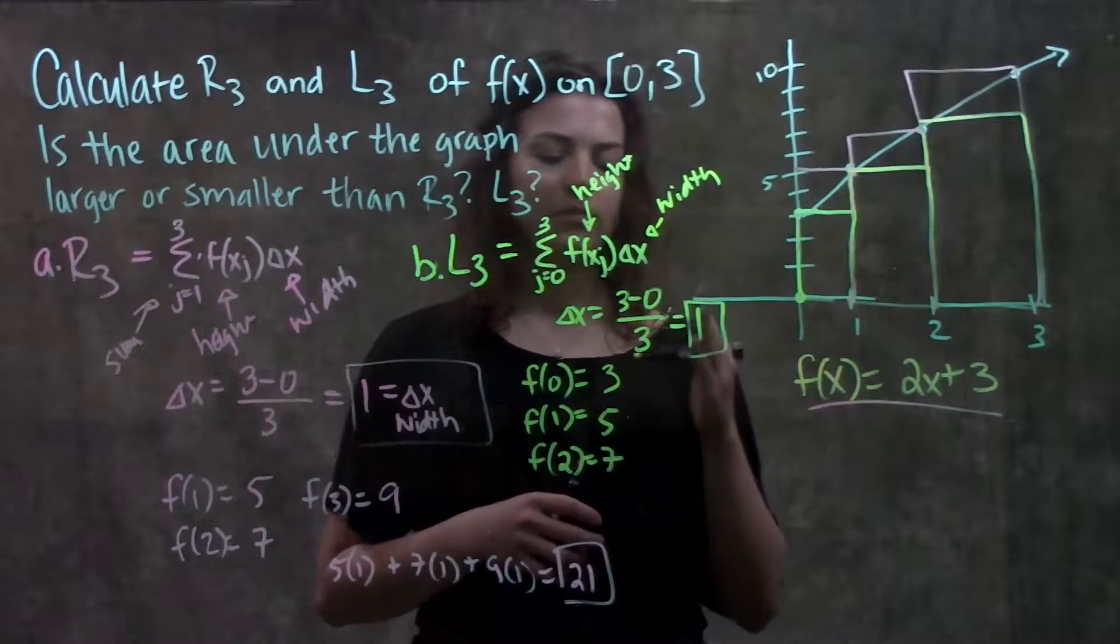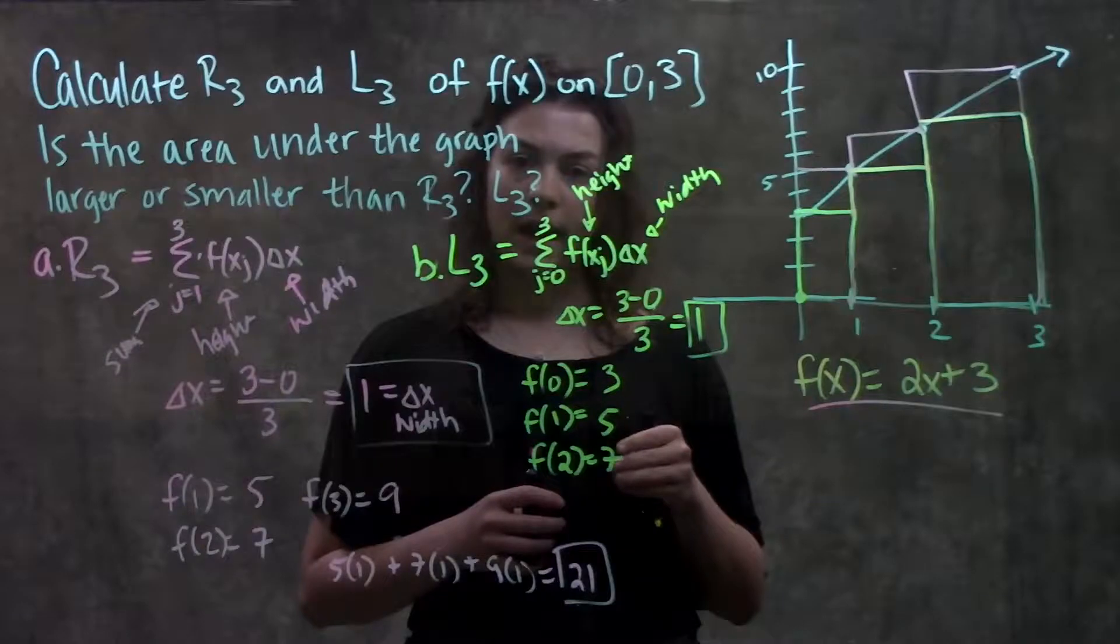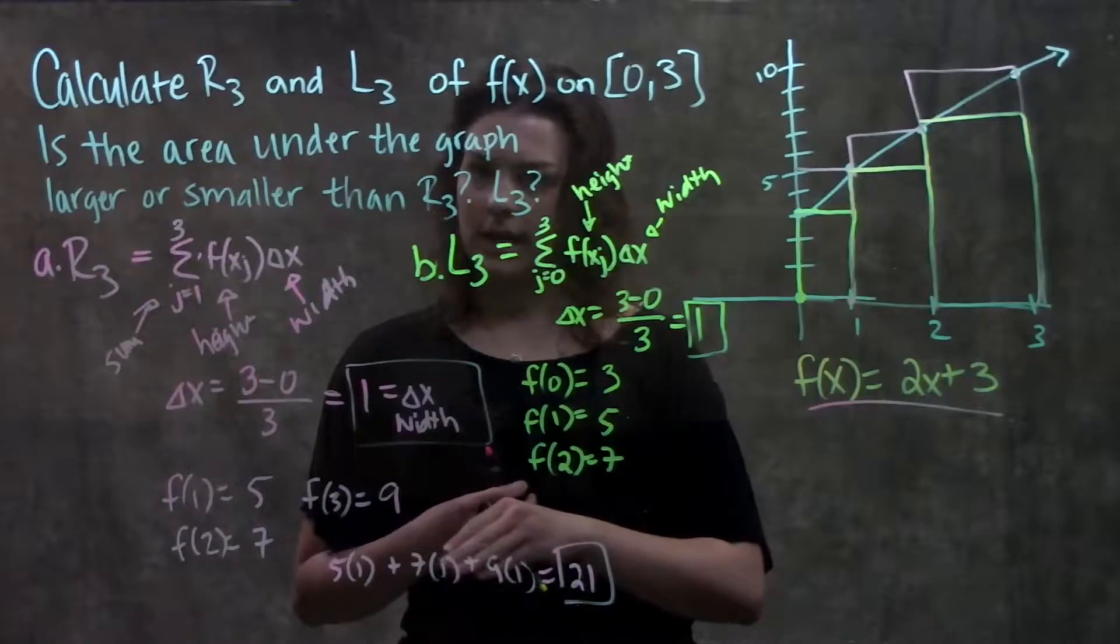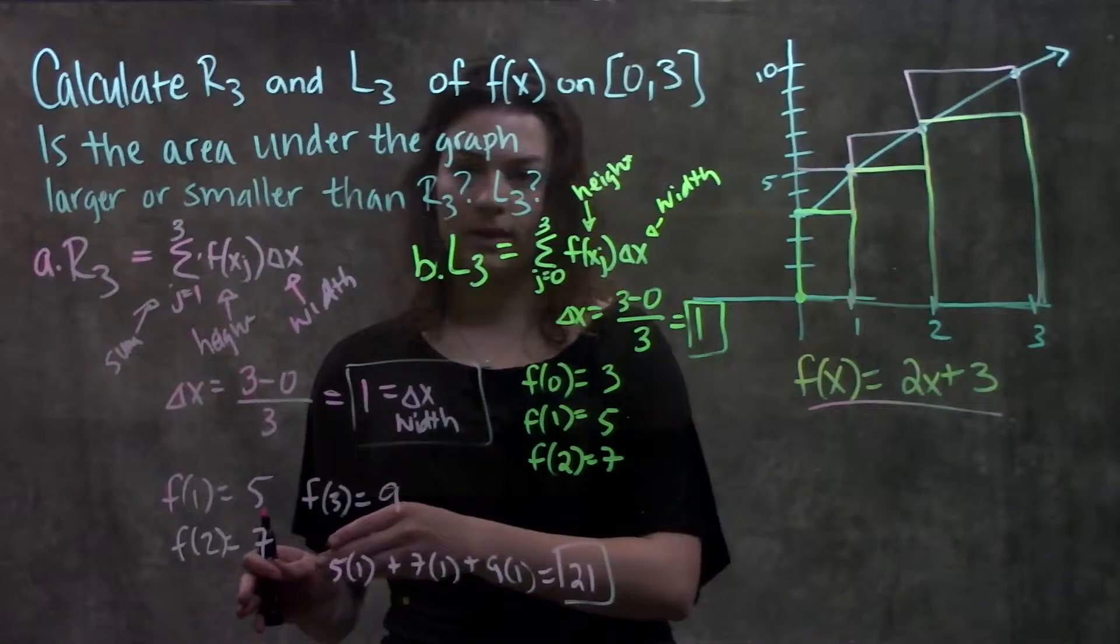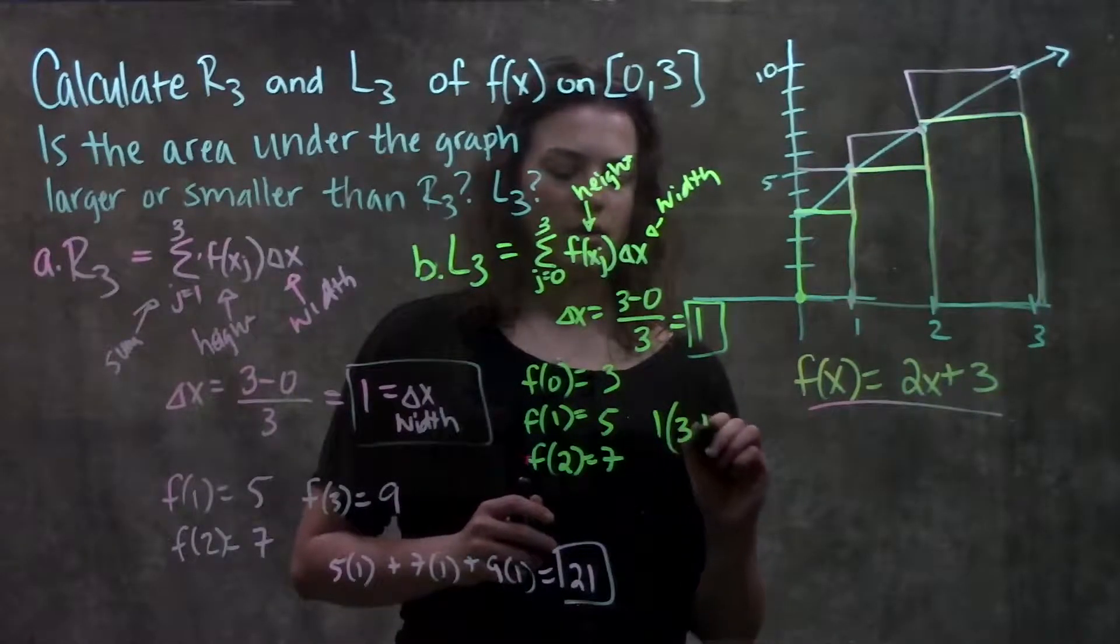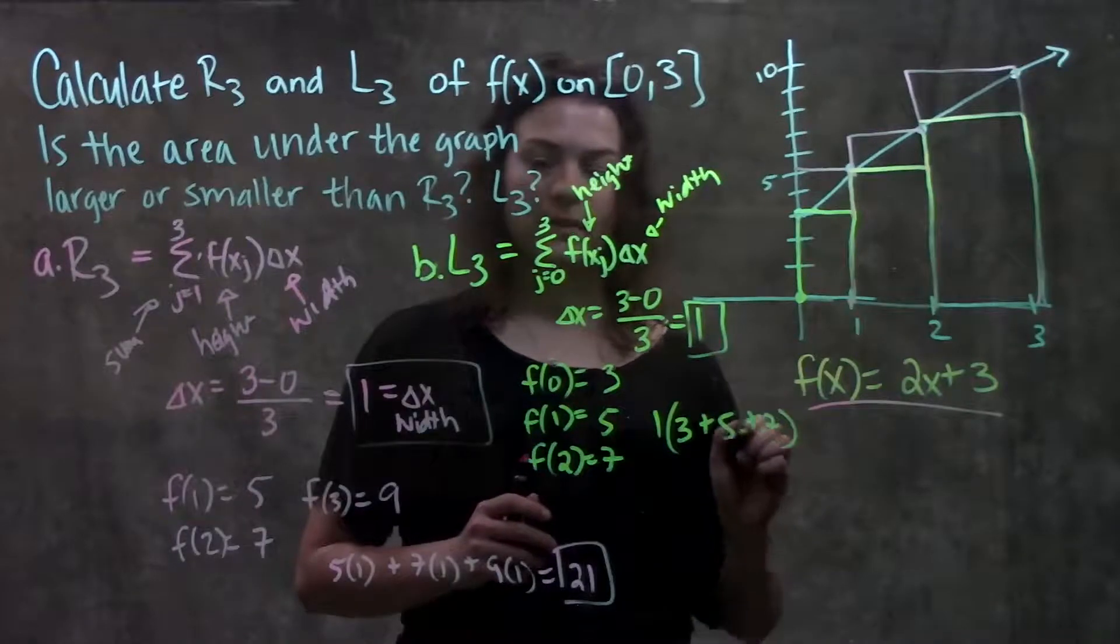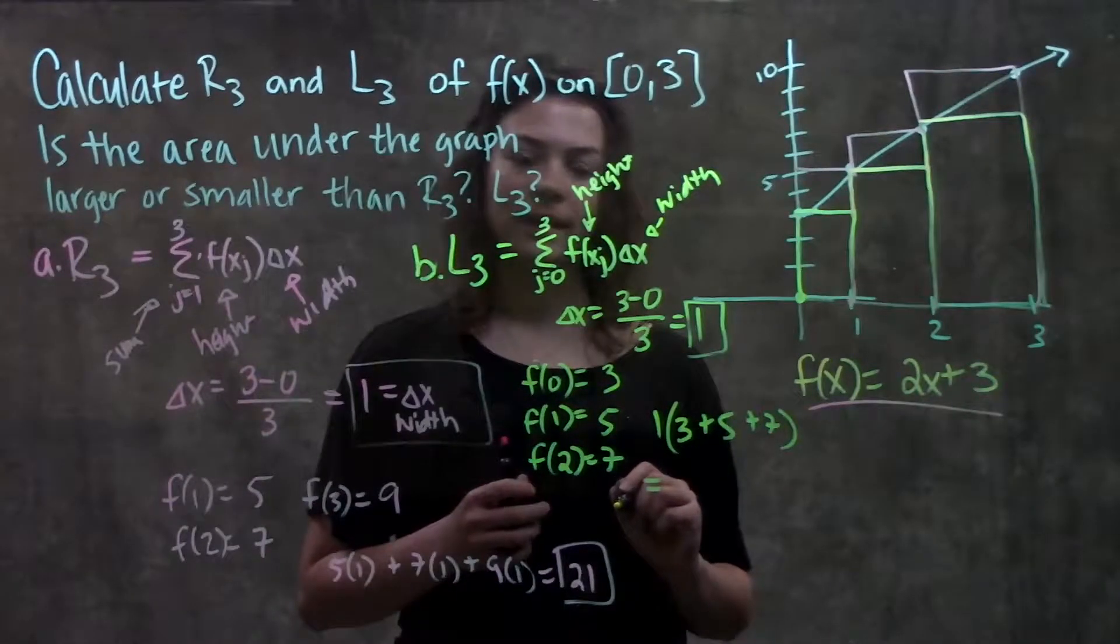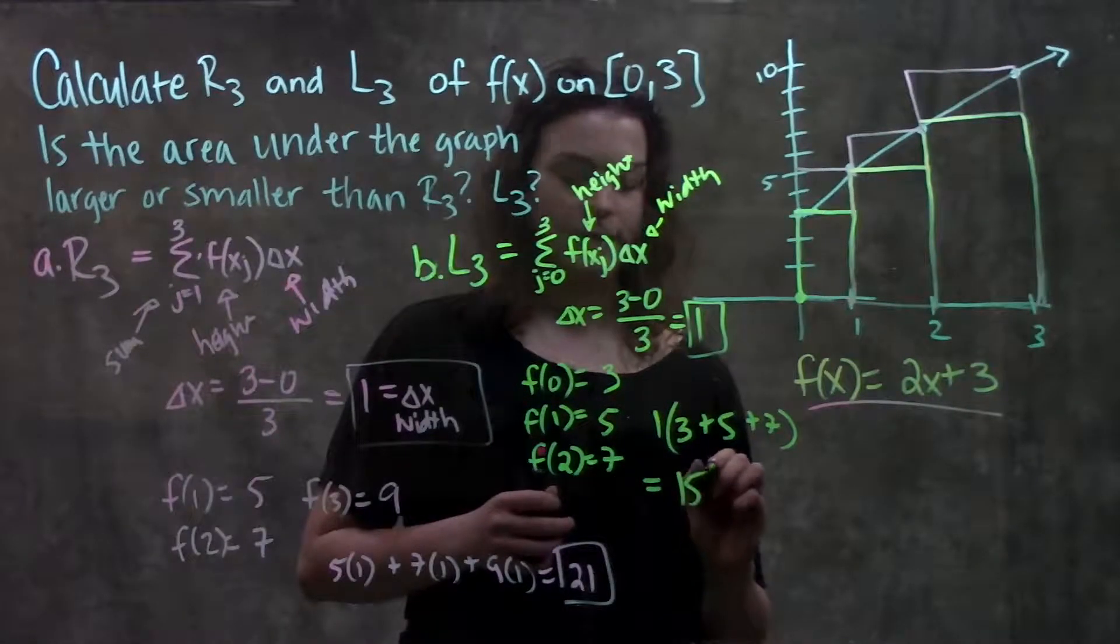And I do the same process. Multiply the width by each of the heights. And instead of writing it out like this, I could factor out the width or factor out this 1, so it becomes 1 times whatever my heights are: 3 plus 5 plus 7. Multiply all this out and you should get 15.